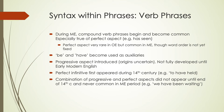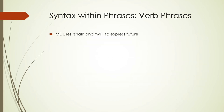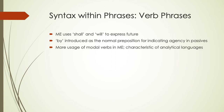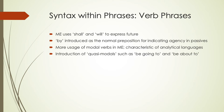We're starting to see more complex verb constructions at the end of Middle English. We also see the use of 'shall' and 'will' to express future, like 'I will go tomorrow,' becoming more common. The preposition 'by' begins indicating agency in passives, such as 'the bowl was knocked over by the dog.' More modal verbs appear in Middle English, characteristic of analytical languages, as English loses inflection. We also see quasi-modals or phrasal modals, like 'be going to' or 'be about to,' starting to appear.